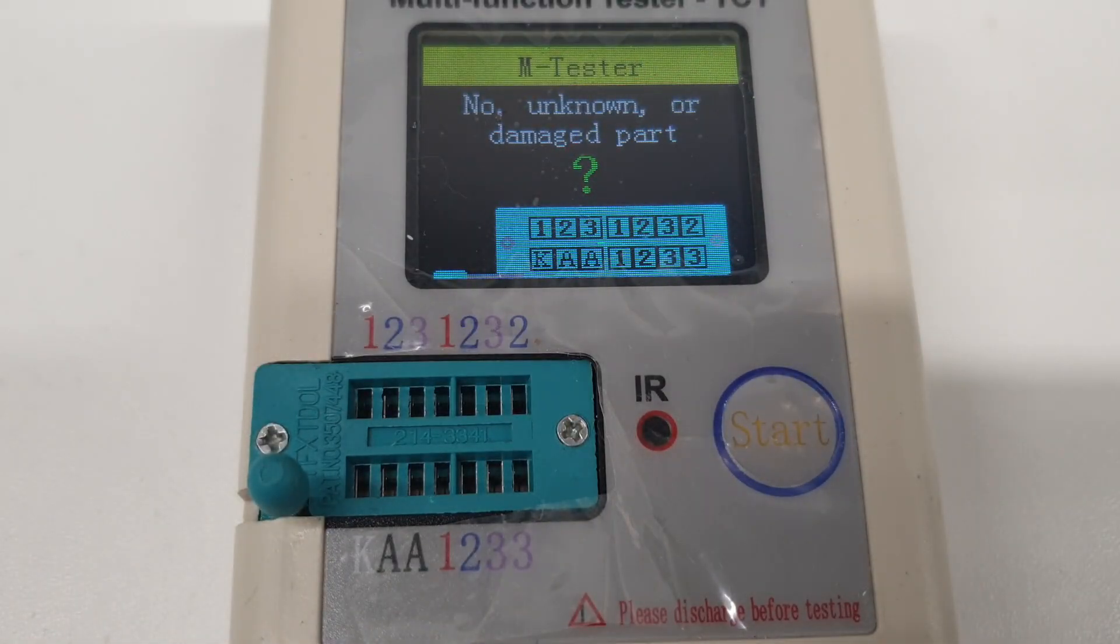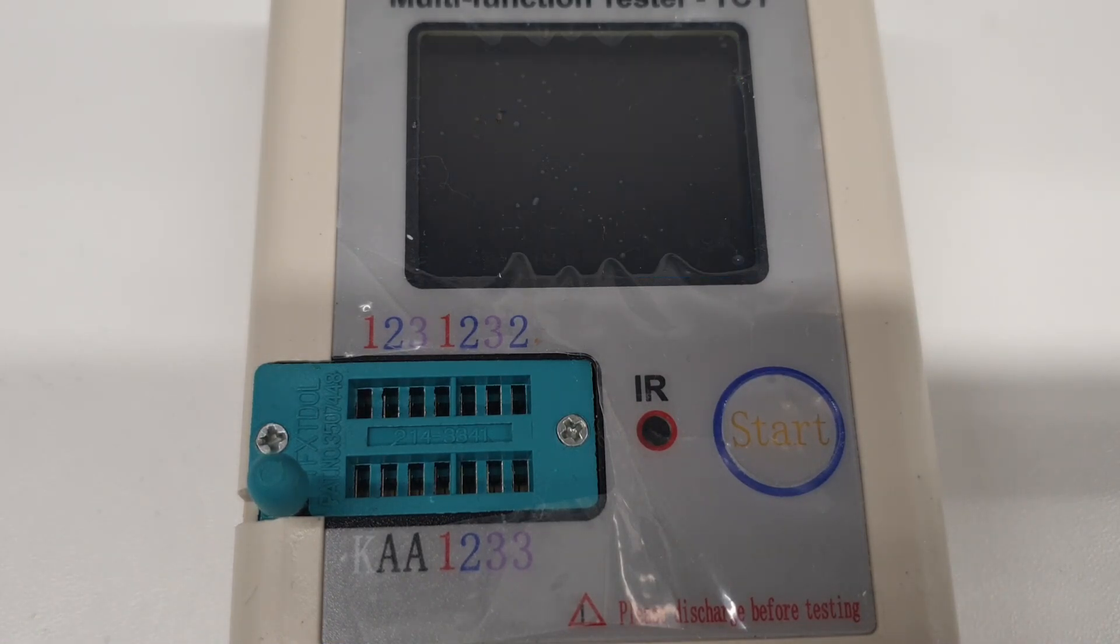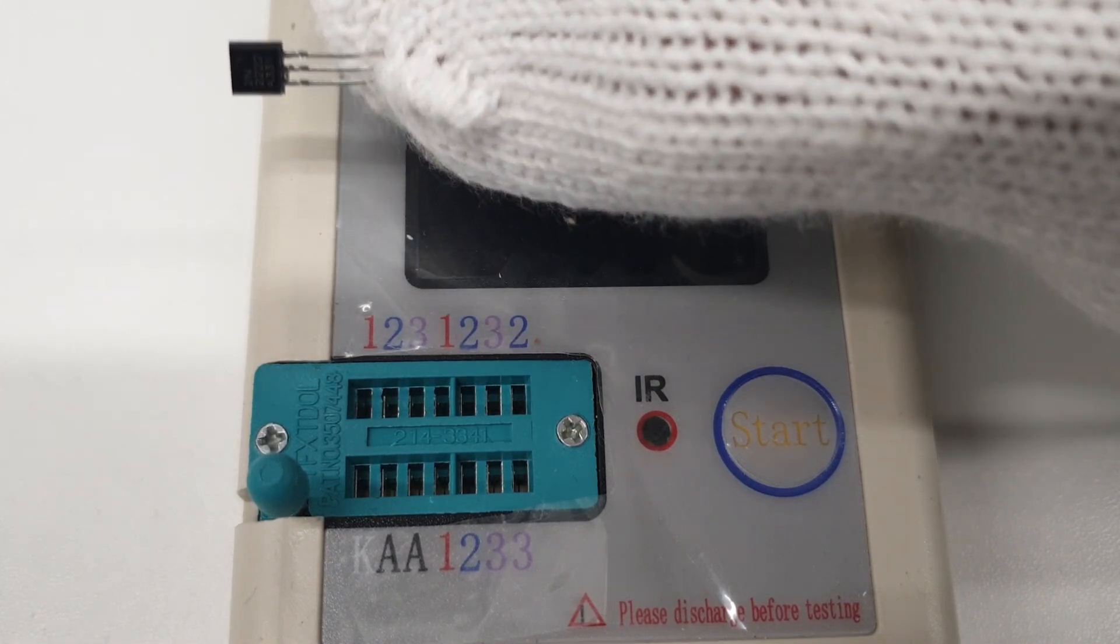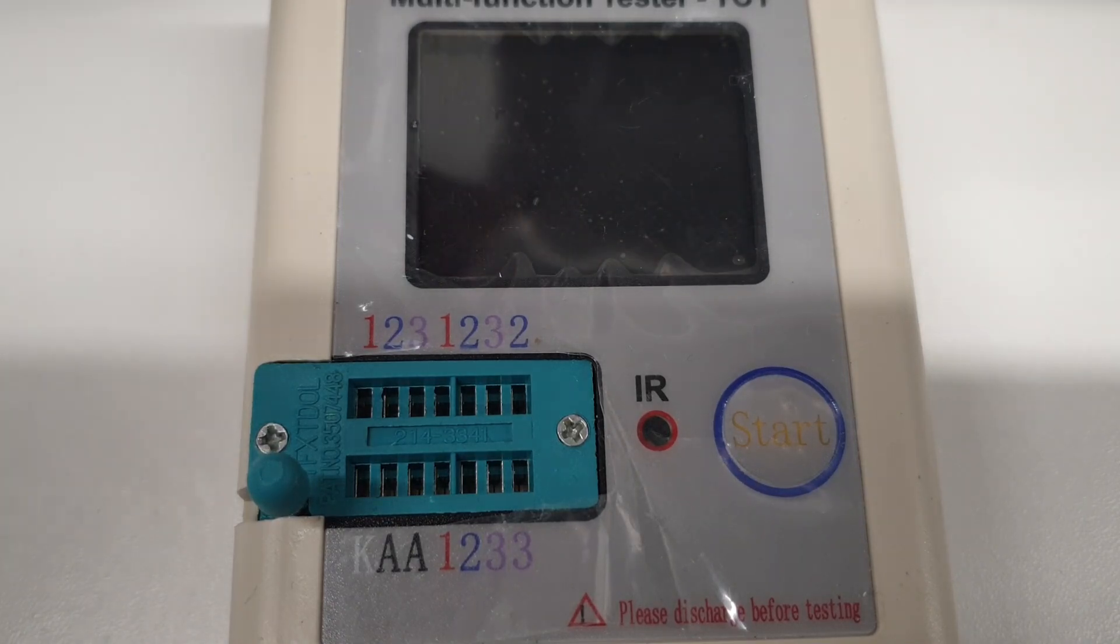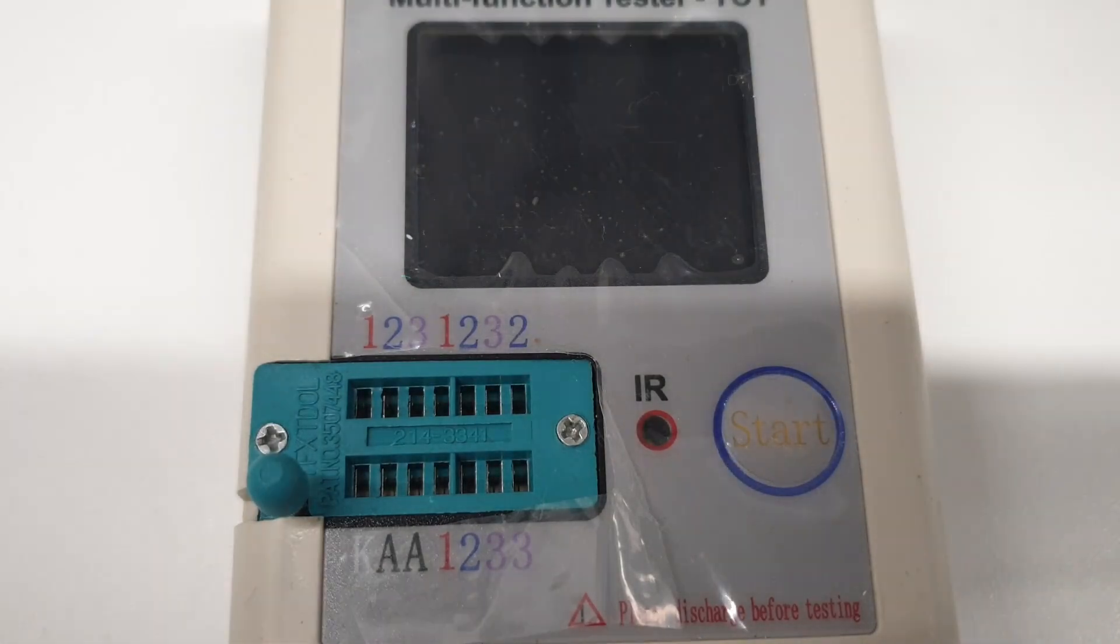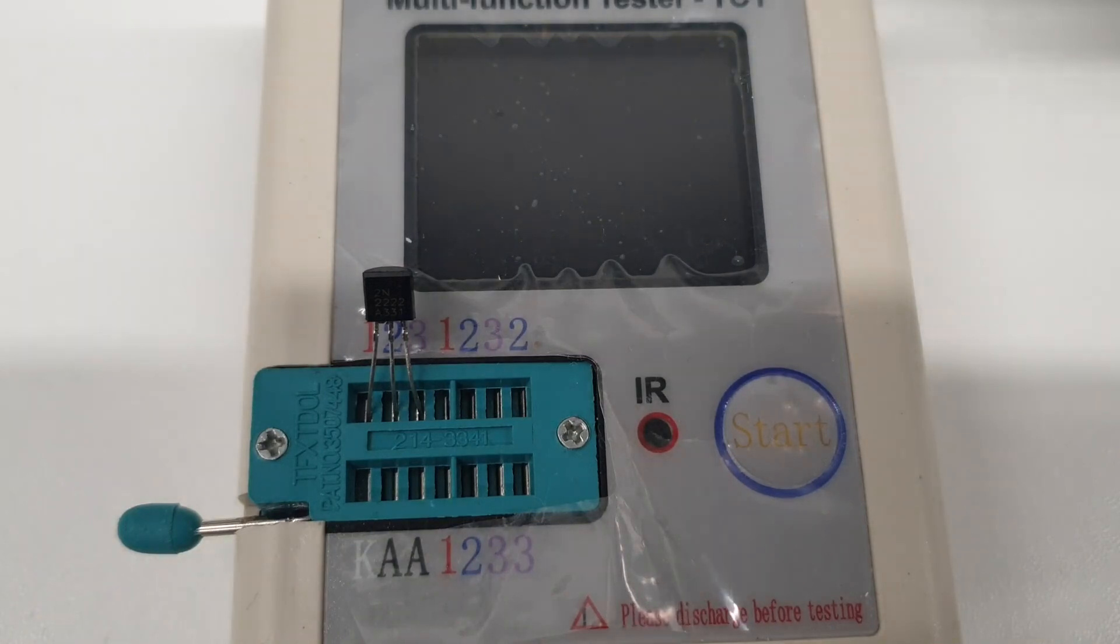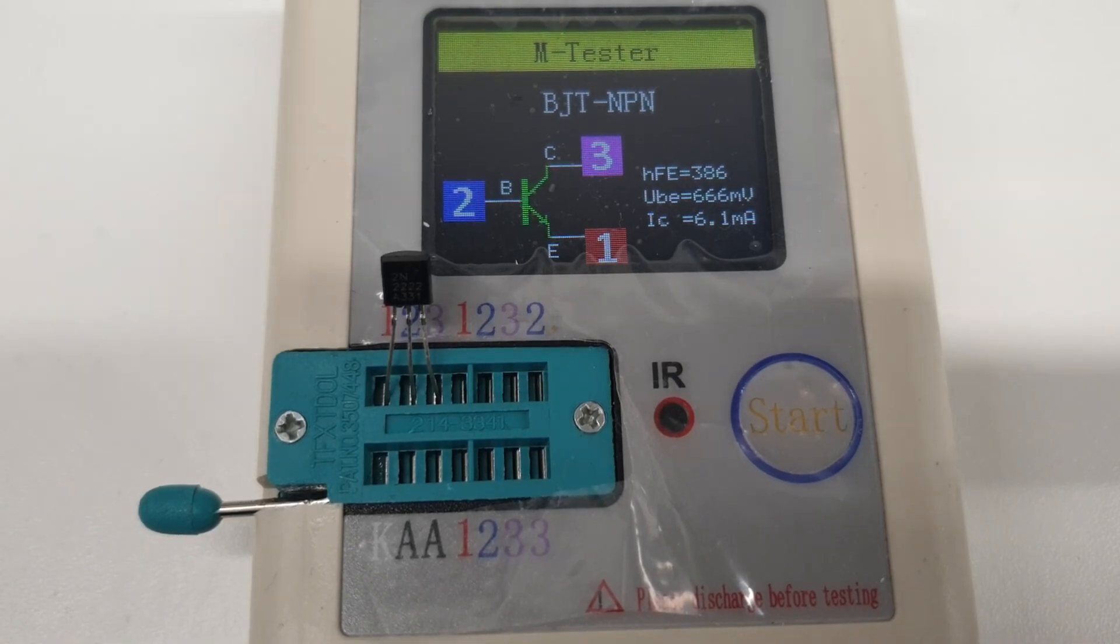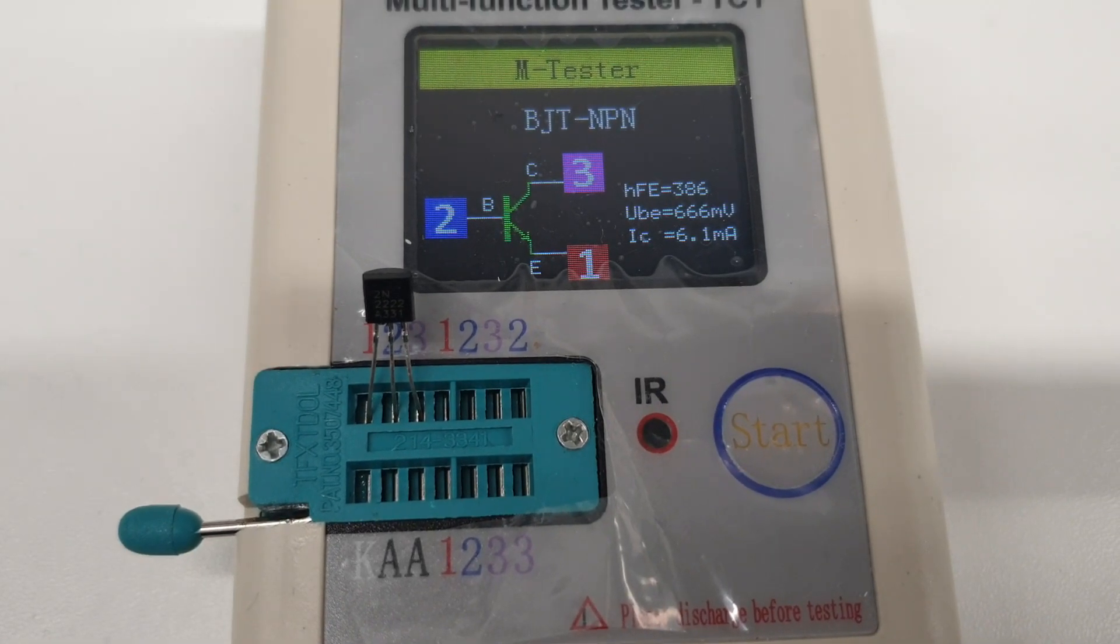We are done with the capacitors. What's next? I've got some transistors. This one is like a 2N2222, a very famous NPN transistor. Let's see what this tester has to tell me about that. Just lock it and test it. It's a BJT transistor. It tells me where is the emitter, where is the base and collector, its hFE, VBE, and collector current.